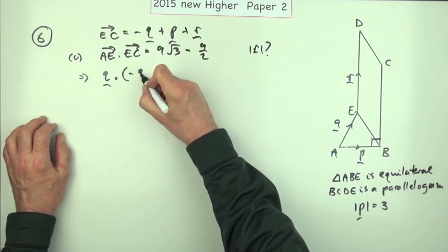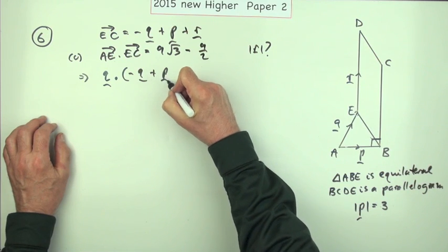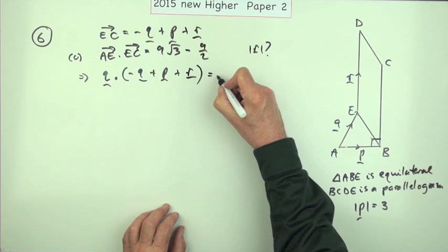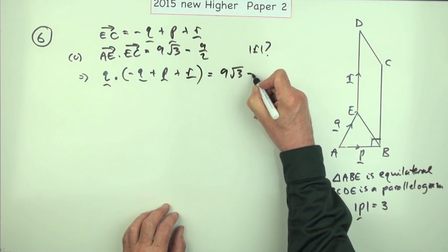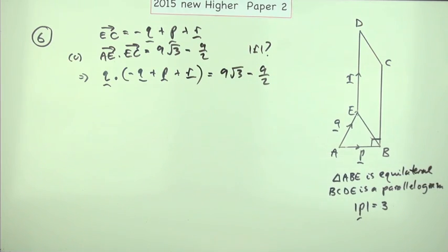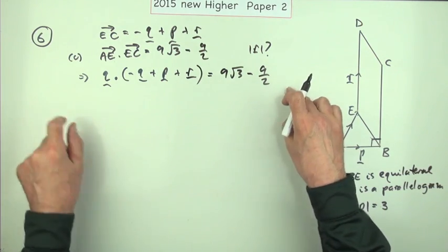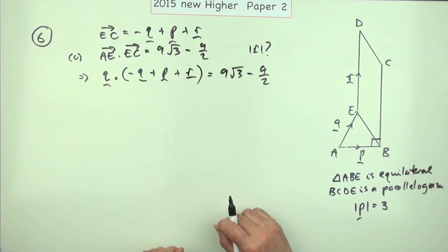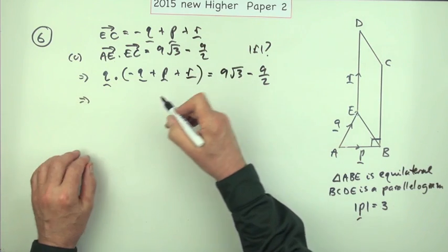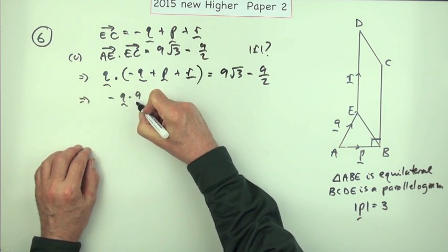AE is just q, and EC, that was the reason why you worked it out, was negative q plus p plus r. So it was gauging you there. That expression should come to 9 root 3 minus 9 over 2, but that doesn't seem to be the first mark yet for that substitution until you've actually multiplied this out.